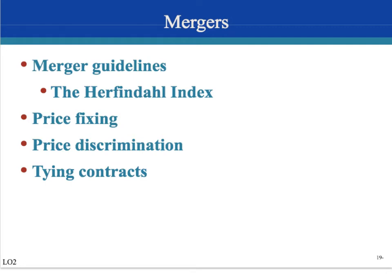The government is tough on price fixing. If firms collude together to set a higher price on all their goods — for example, all airlines colluding to charge high prices on flights to New York City — the government is very tough on those situations. Price discrimination is harder to evaluate. Charging a lower-priced movie ticket to senior citizens and students doesn't decrease competition, so the government is only harder on price discrimination when it is aimed at blocking new competitors from entering the market or driving out existing competitors.